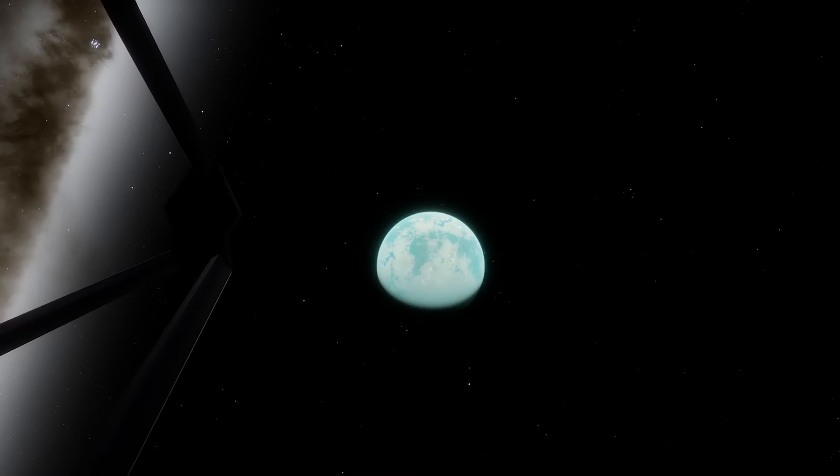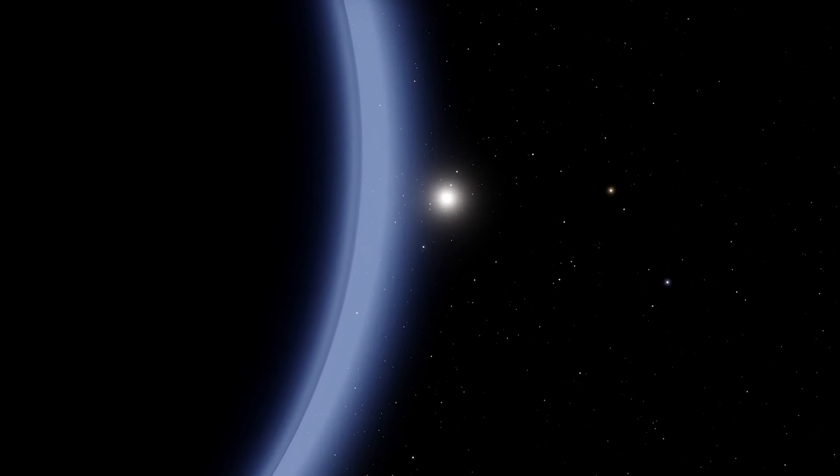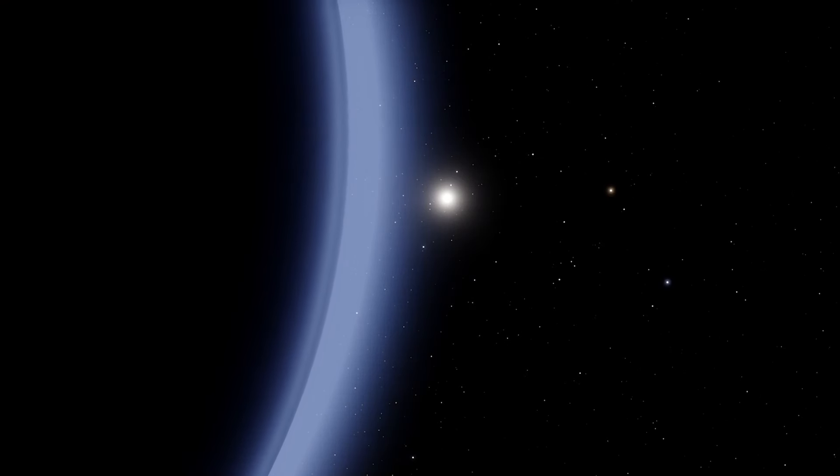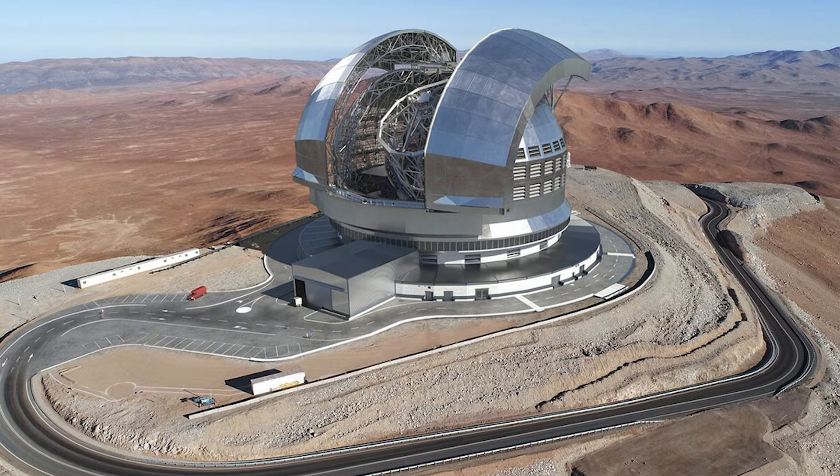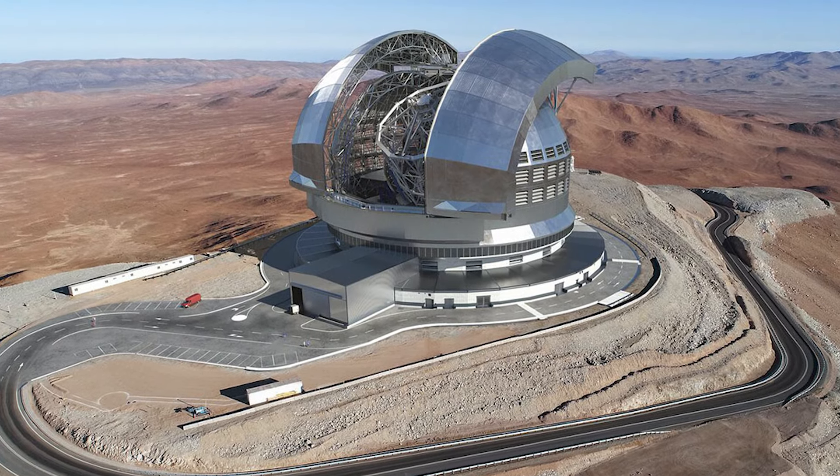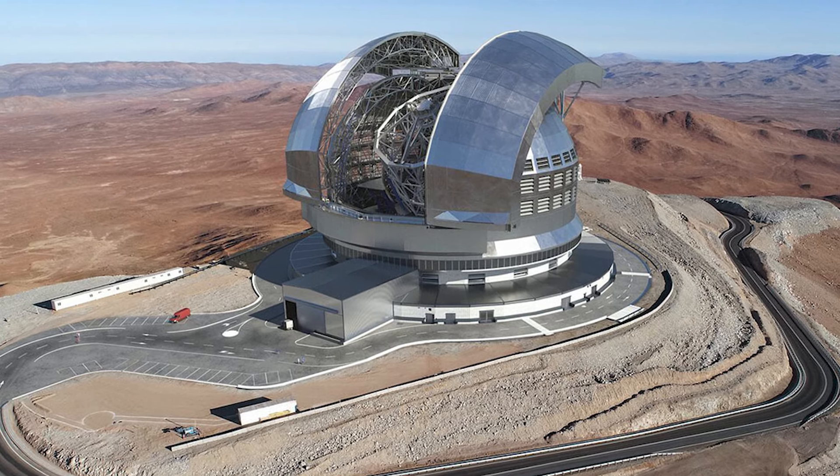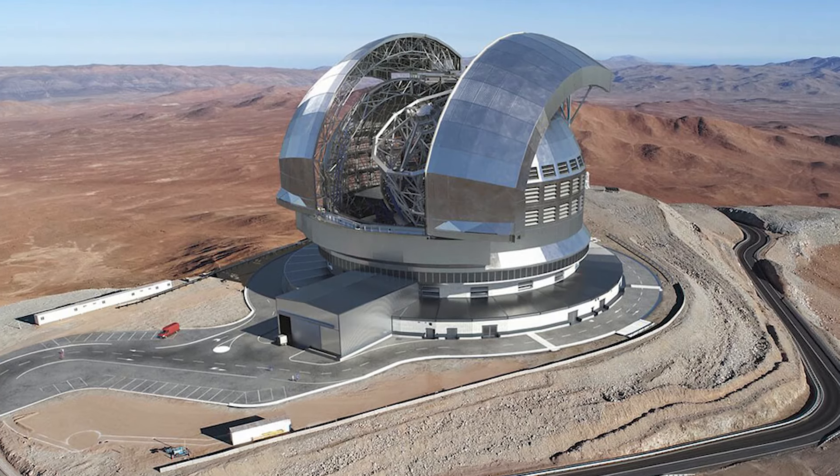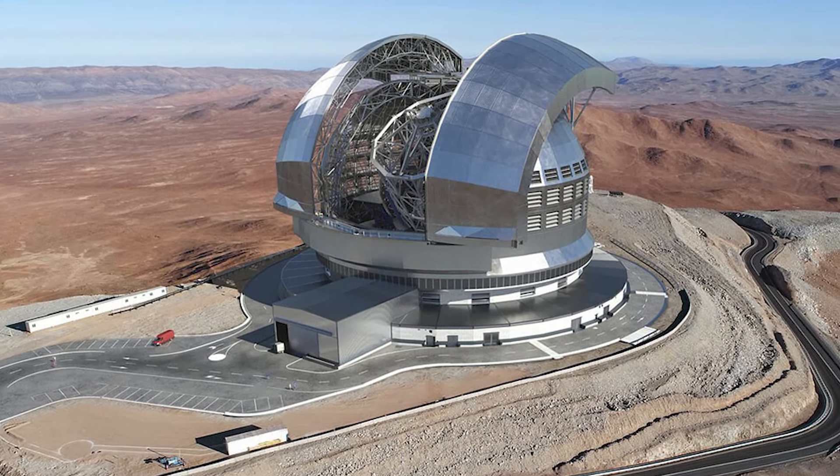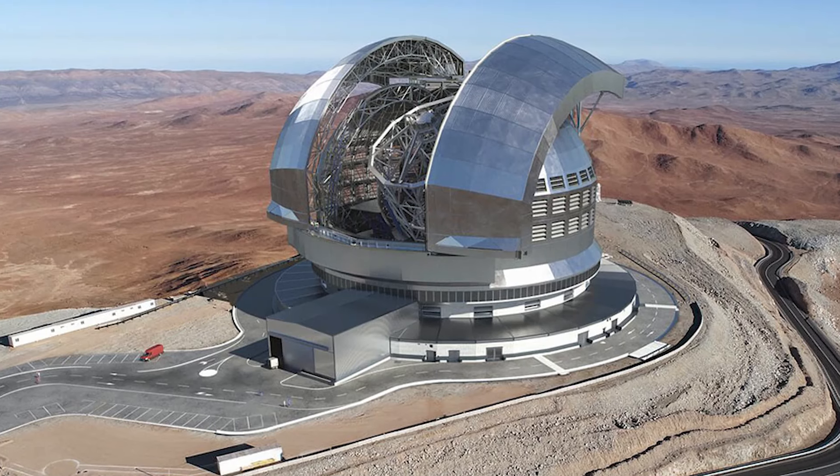It is important to keep in mind that the JWST cannot explore all potential habitable worlds, as it has limited capabilities and can only observe some of the exoplanets closest to Earth. Therefore, astronomers are turning to ground-based observatories such as the Extremely Large Telescope, the ELT, which is expected to become operational in 2028, and allow for a deeper investigation of the atmospheric structure of distant exoplanets.